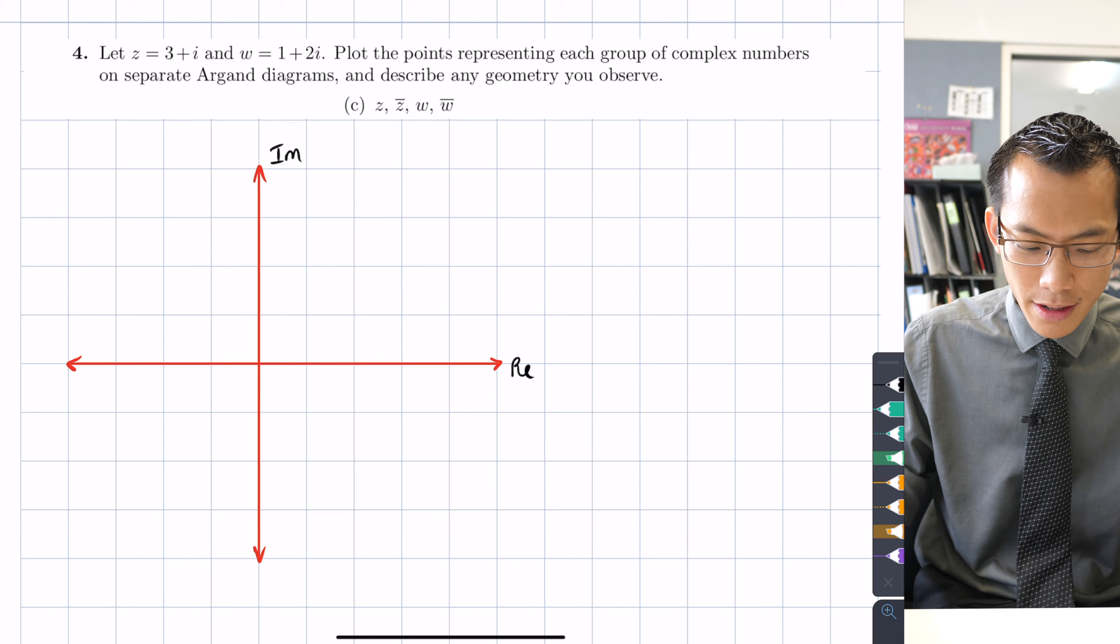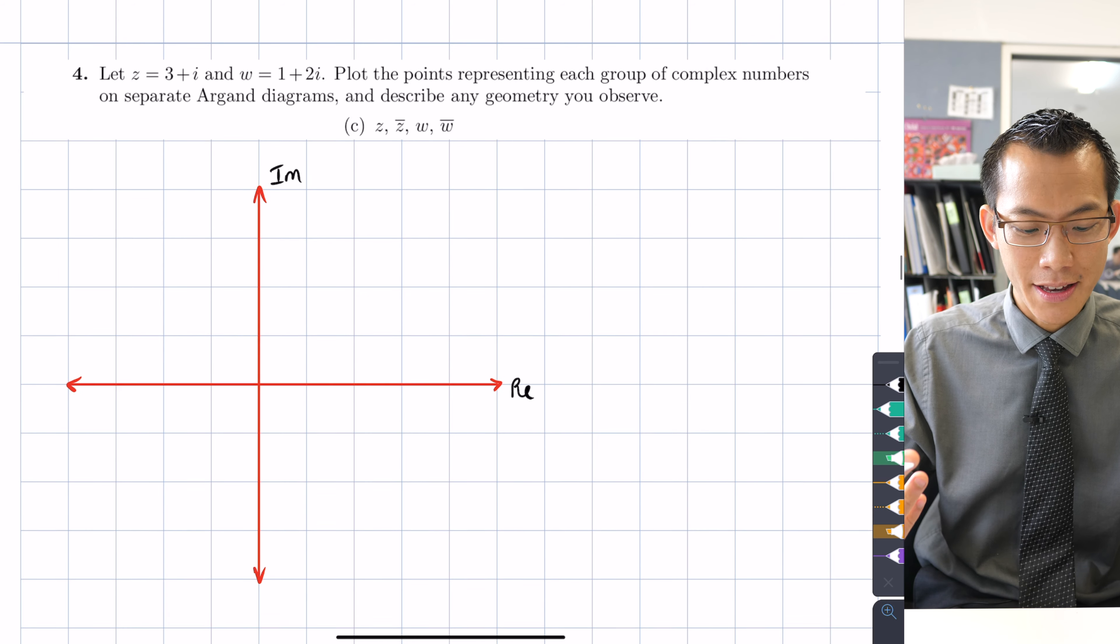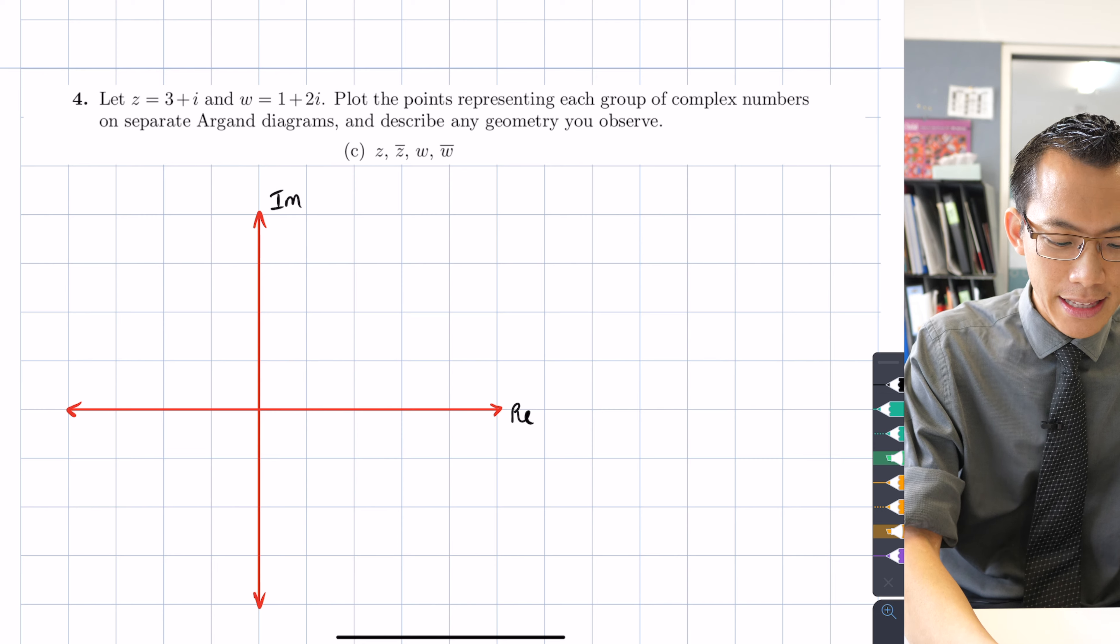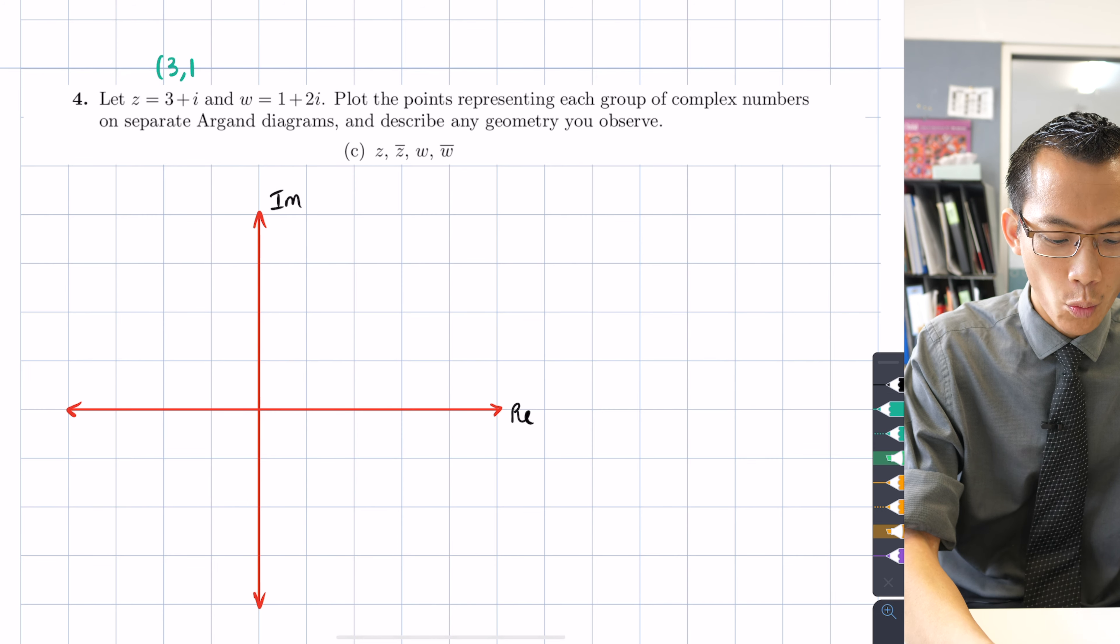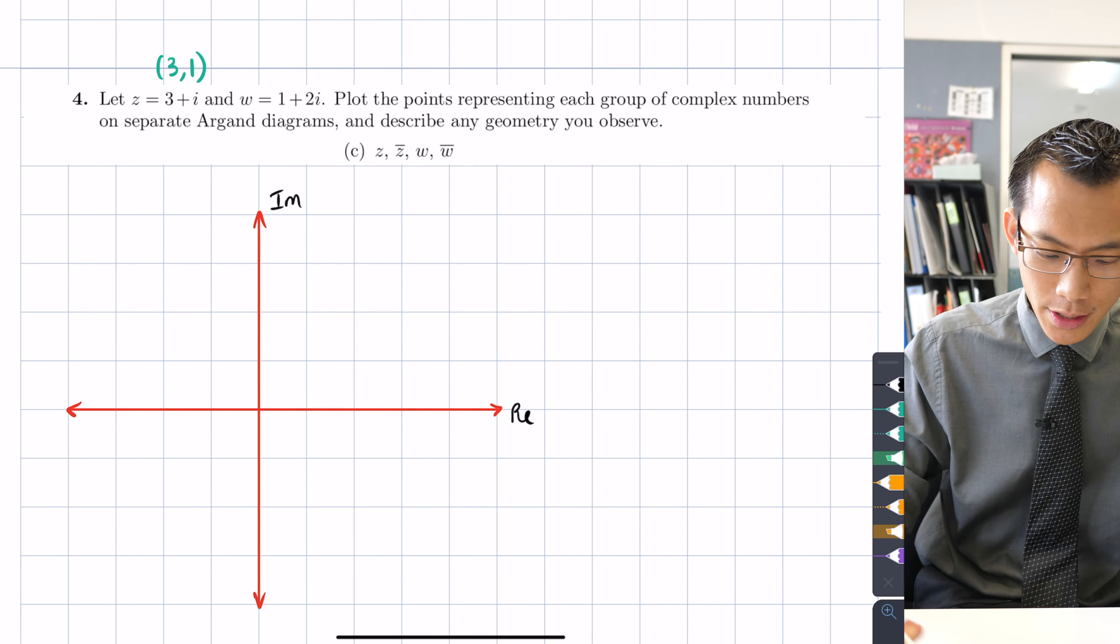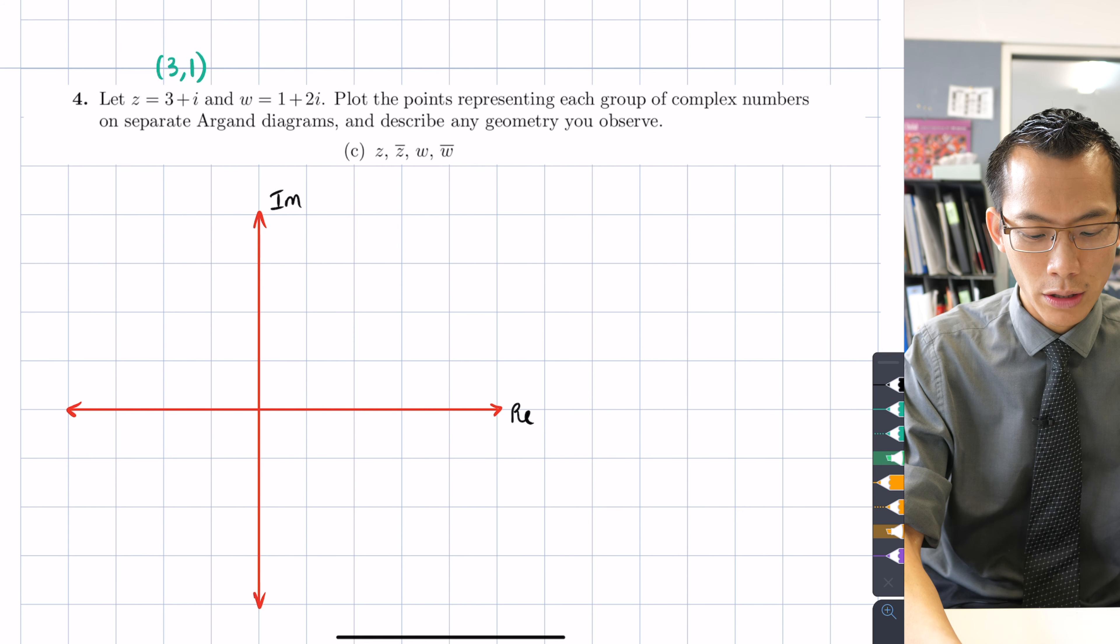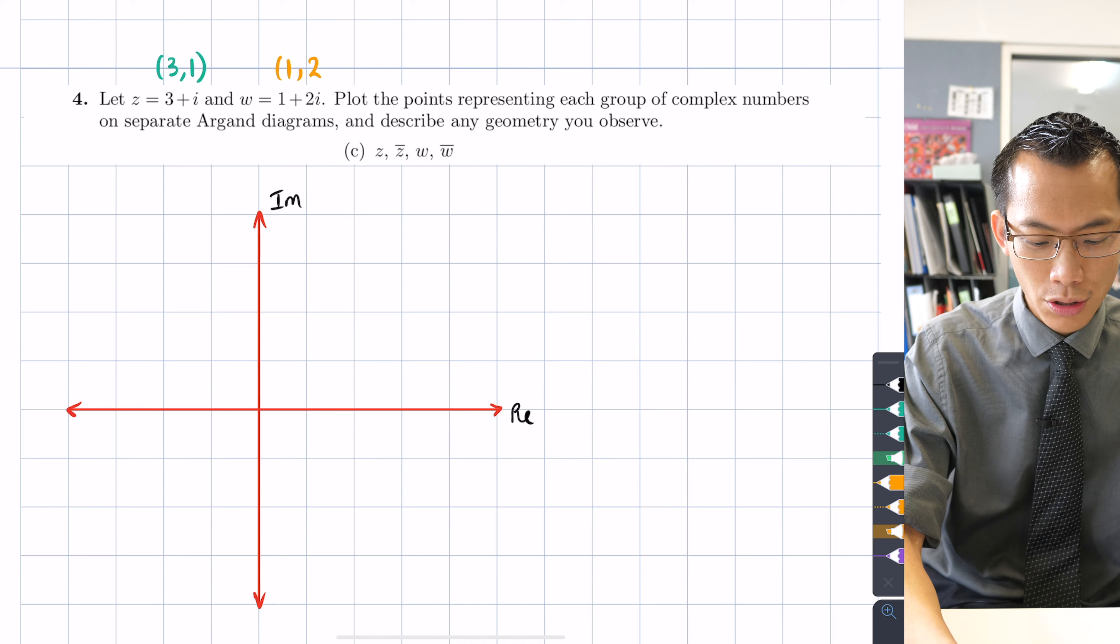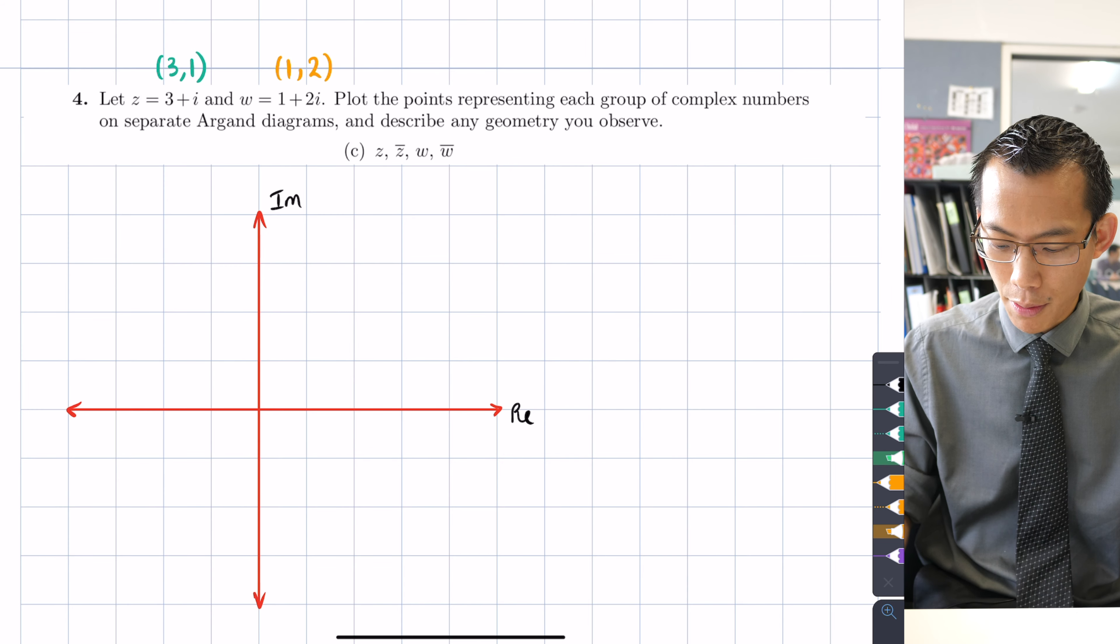We can conceptualize a number like 3 + i. Where does it live? It lives at 3 comma 1, the real and the imaginary components. And then conversely w would live at 1 comma 2. So let's go ahead and plot both of those on there.